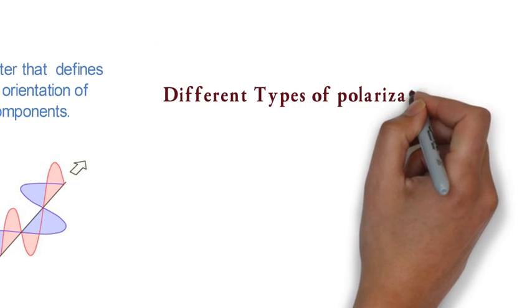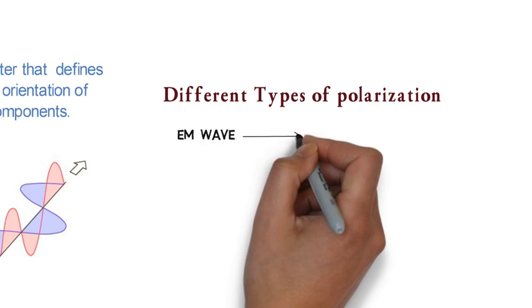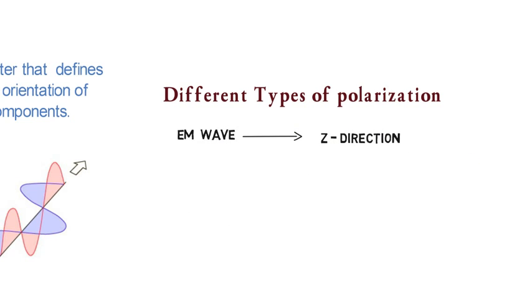Now let's see what are the various types of polarization. Let us consider electromagnetic wave is propagating in Z direction. Then there will be 5 cases related to this, which we are going to discuss one by one.